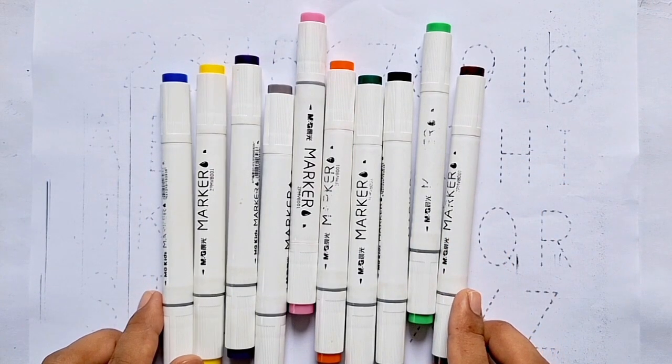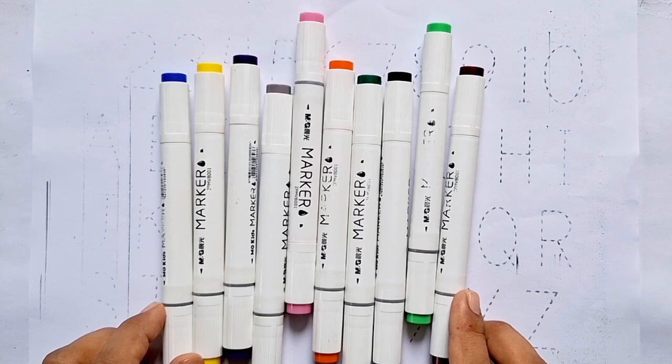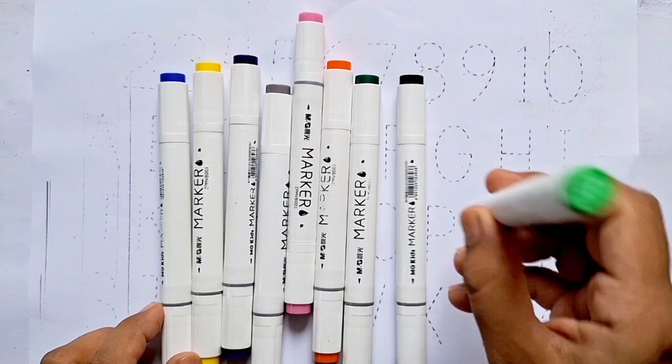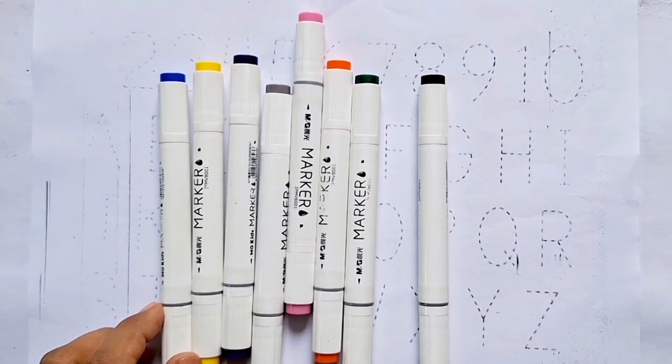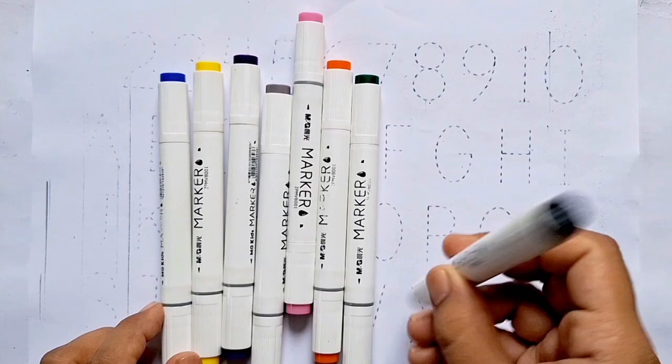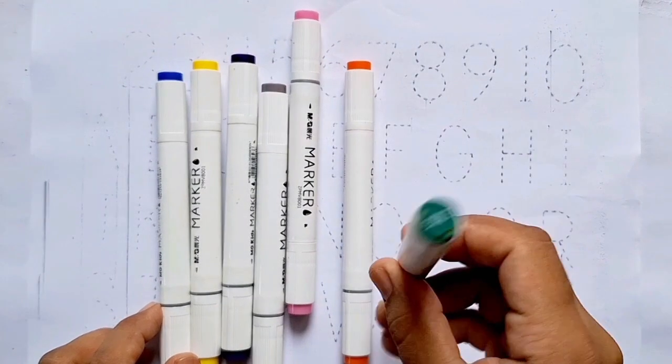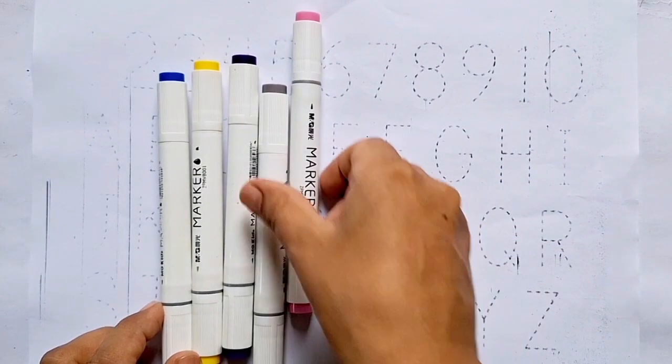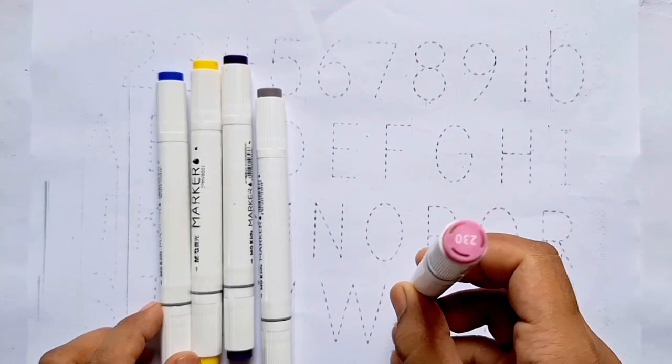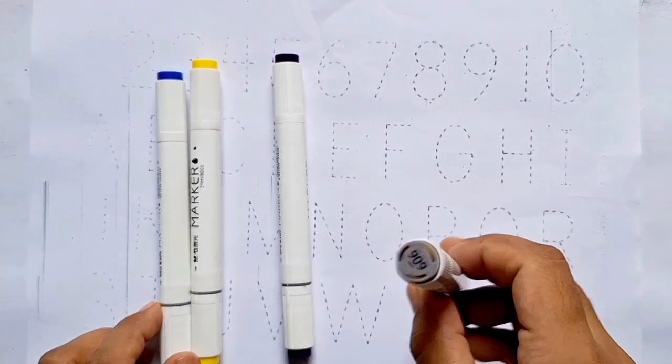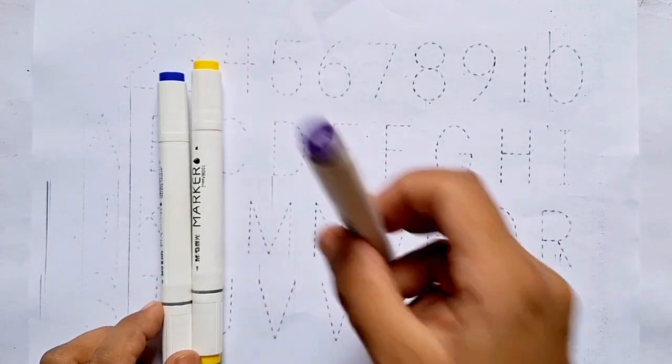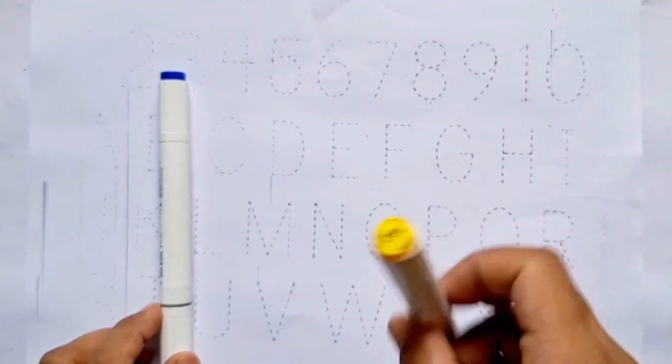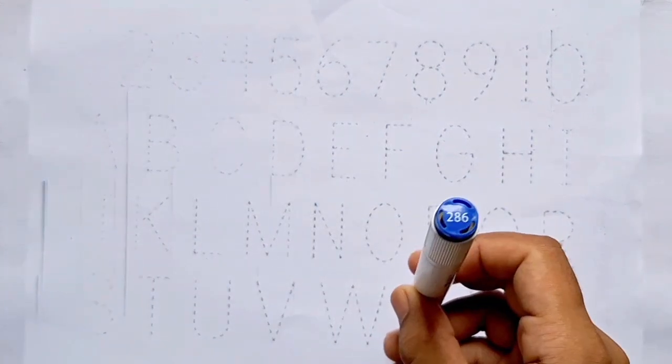But before we begin, let's learn some colors. Brown color, light green color, black color, dark green color, orange color, baby pink color, gray color, purple color, yellow color, dark blue color.